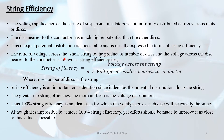The ratio of the voltage across the whole string to the product of number of disks and the voltage across the disk nearest to the conductor is known as string efficiency. String efficiency equals voltage across the whole string divided by the product of number of disks (n) into the voltage across the disk nearest to the conductor.